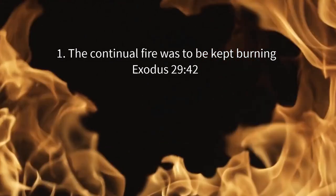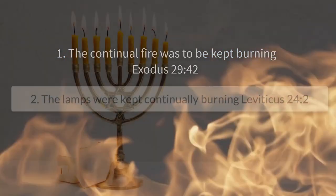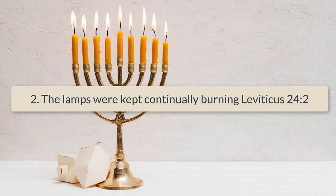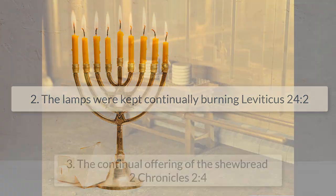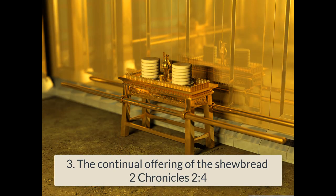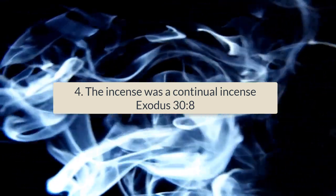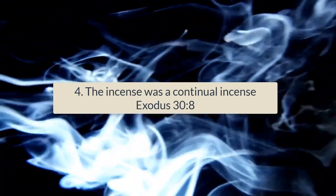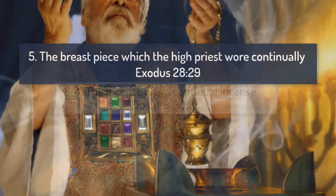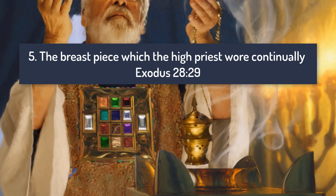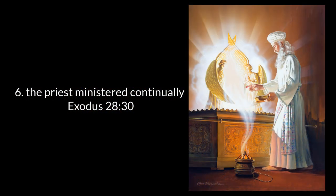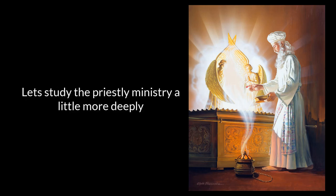The following Bible references list many of the rituals of the sanctuary that are continual. These continual rituals represented the different aspects of the saving ministry of Jesus Christ in the heavenly sanctuary. Number 1: the continual fire was to be kept burning. Number 2: the lamps were kept continually burning. Number 3: the continual offering of the showbread. Number 4: the incense was a continual incense. Number 5: the breast piece which the high priest wore continually whenever his duties required him to enter the sanctuary. Number 6: the priest ministered continually.